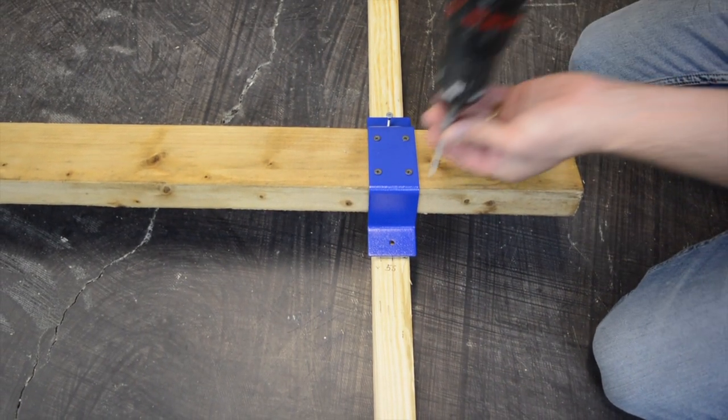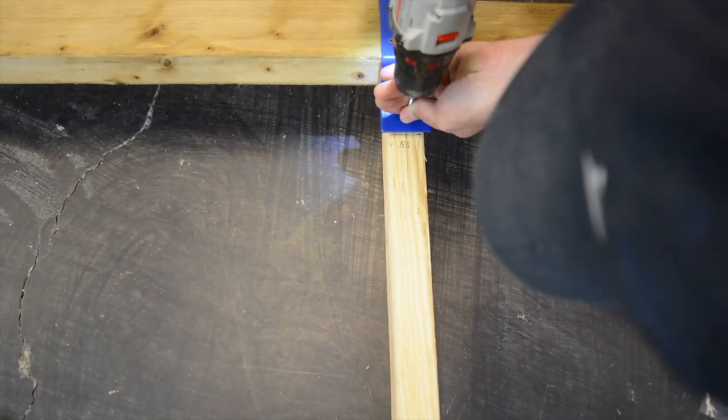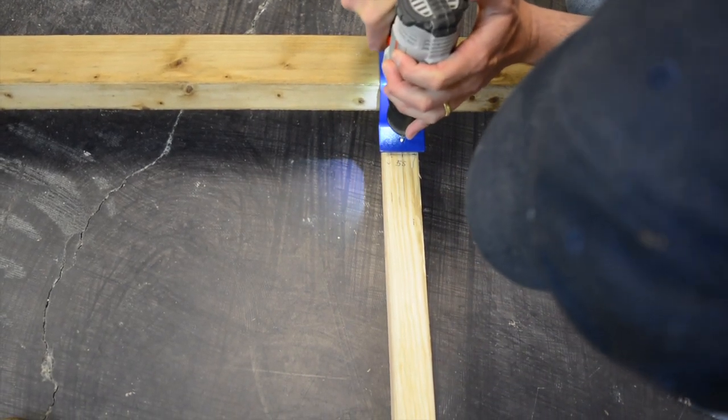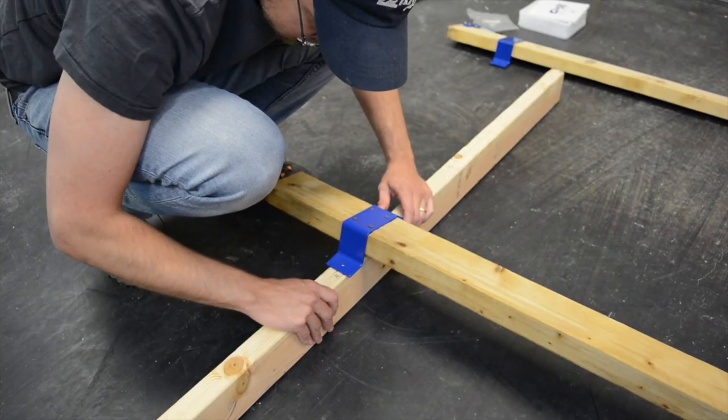Now the stud mount is what's going to line up with that 55 inch line, and that perpendicular center line that we made is going to go through the center of the bottom and the top holes on our stud mount.